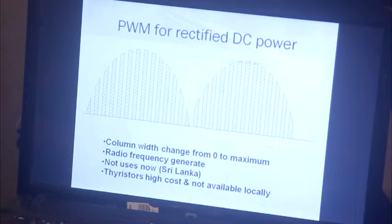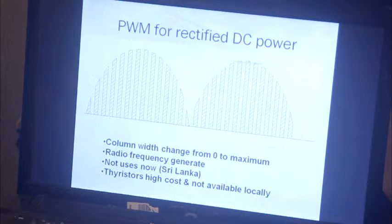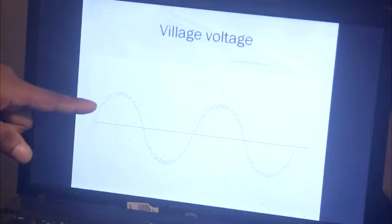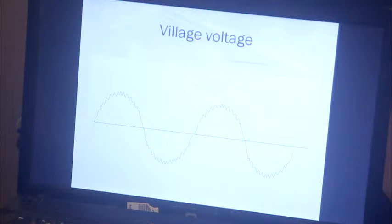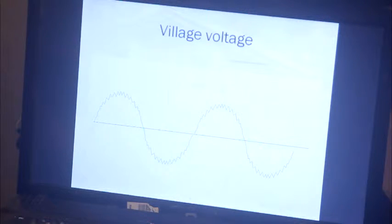One disadvantage of the mark space controller is very high frequency waveform chopping, which generates radio frequencies. The waveform going to the village shows the sine wave superimposed with very high frequency waves due to pulse width modulation. This distortion seriously affects the hydropower controller components. According to developers, electronic components burnt out during lightning periods, with a maximum lifetime of less than three months. Due to so many faults so quickly, this technology was abandoned and I have not seen this technology used in Sri Lanka or India.